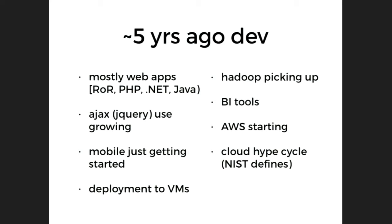This is kind of the sales-pitchy part for the idea. I went back through emails and the web and this is what I grokked from five years ago about what dev looked like — kind of a history lesson. AWS was just starting, the cloud hype cycle meant nobody knew what cloud was because everybody called it something different. This was around when NIST defined what the cloud meant. Mobile had just started. Ajax had been around for about a year. Big data was starting to come online.